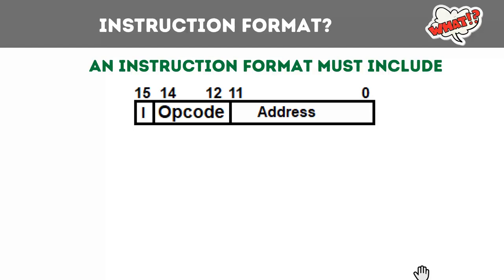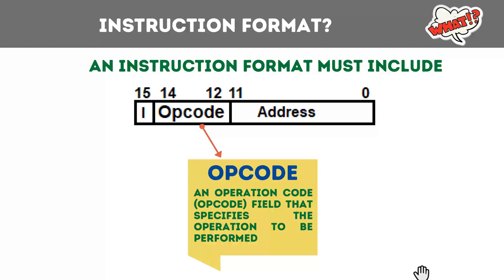These sequences of bits are divided into different components, each representing a different part of the instruction. The first component is the opcode — the operation that this instruction is going to perform. For example, if we want to perform addition, the opcode will be 'add'; similarly for subtraction, multiplication, division, or shift. Each operation is represented by a specific code called opcode, and we must dedicate some bits for these opcodes.